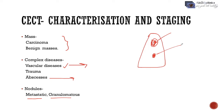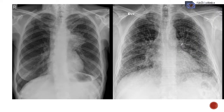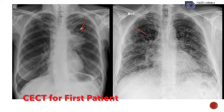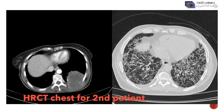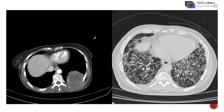Coming to our query: we can see there is a mass in the first X-ray and diffuse lung disease in the second X-ray. So we need to do a contrast enhanced CT scan for the first patient and an HRCT scan for the second patient.